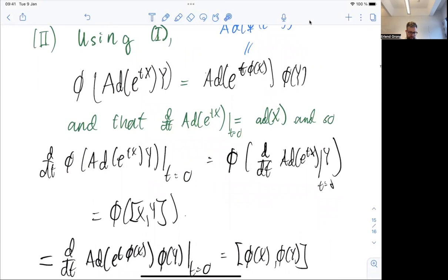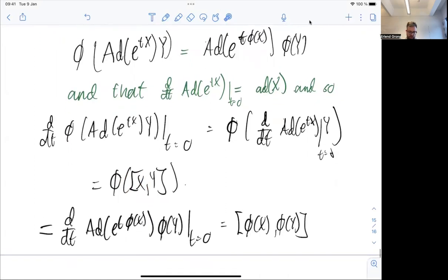If we take the exponential here and take the derivative at time equal to zero, we get the small ad map. So that means that here, if I take the derivative of this side and evaluate it at T equal to zero, phi is a linear map, multiplying with y is a linear map. So I can just move everything inside and take the derivative here, and the result is small phi of the bracket. But then if I differentiate this other side here, this will then be bracket of phi x and phi of y.